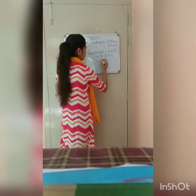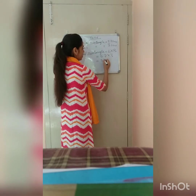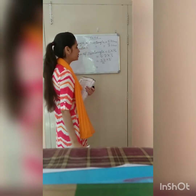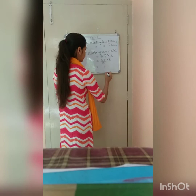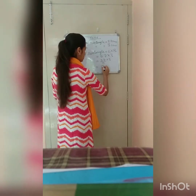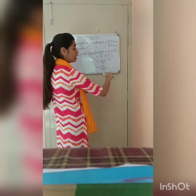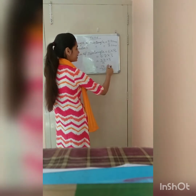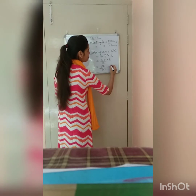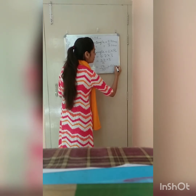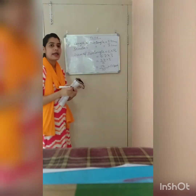We will convert this decimal into a fraction. It will come out to be 57 by 10 into 3, giving 171 by 10. Now we will convert this fraction into a decimal. It will come out to be 17.1 cm squared. The unit is very important — centimeter square. So this is the answer.